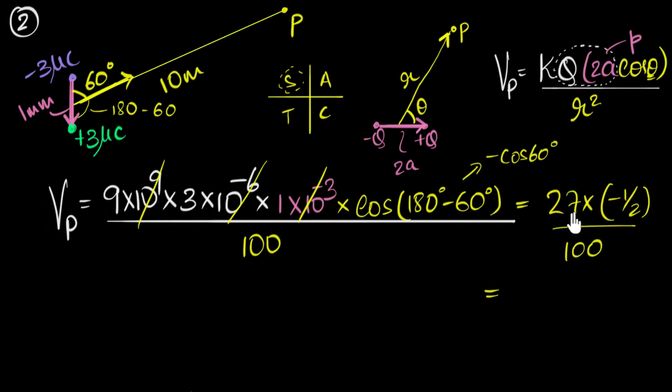And that's gonna be 27 by two, which is 13.5. So it's negative 13.5 divided by 100. So that's minus 0.135 volt.